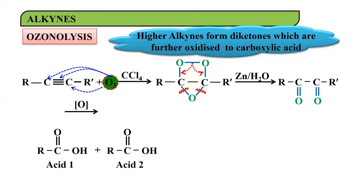To summarize: if your alkyne is a higher alkyne, the diketone formed is unstable and converts into carboxylic acids. For smaller alkynes, you use H₂O₂ as the oxidizing agent. This was all about ozonolysis of alkynes. We'll meet in the next module — thank you and happy learning.